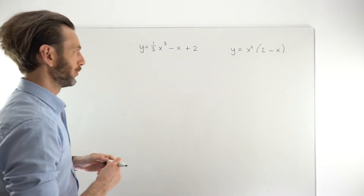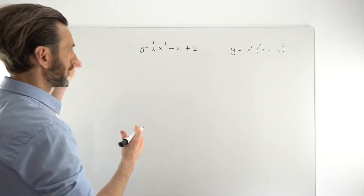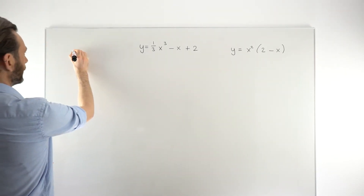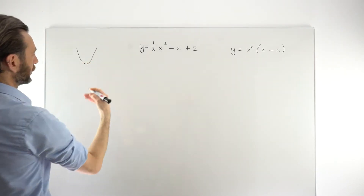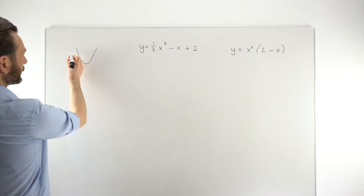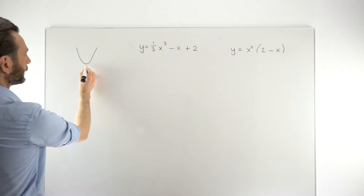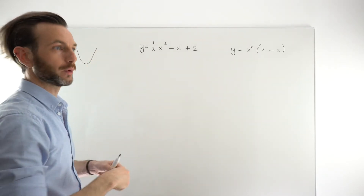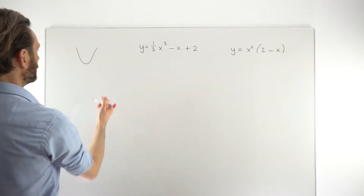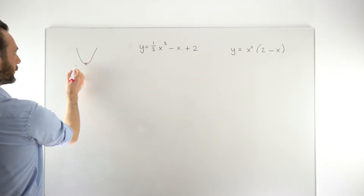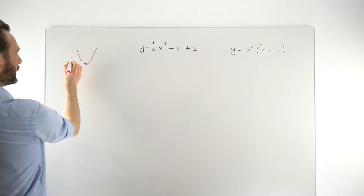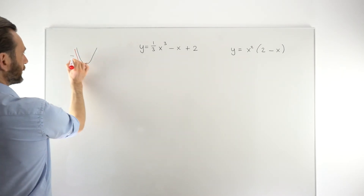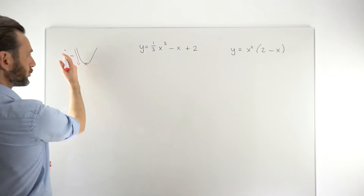A stationary point, as a reminder, is basically where the graph of a function changes direction. For example, a parabola from a quadratic function slopes down and then it stops and slopes back up. Where it stops and changes direction, that's what we call a stationary point. In this part of the function, you've got a negative slope — negative gradients on the tangent lines.